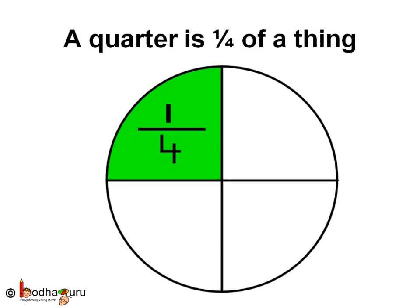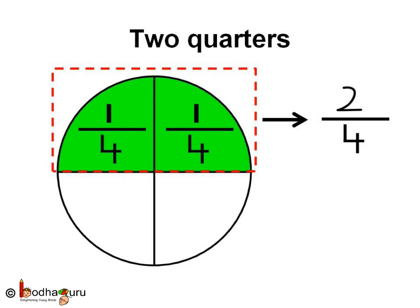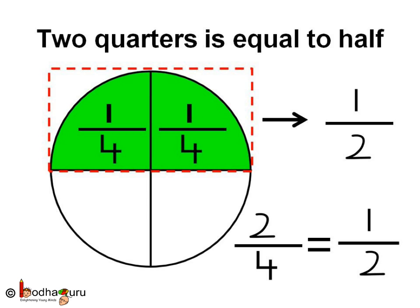Now let us revise what we understood about parts. What part of the circle is colored? There are four parts, so it is one fourth part of the whole which is colored. We can also call it a quarter. Here, two fourths are colored. Look — two fourths is equal to half, so we can also call it half. Half is equal to two fourths.